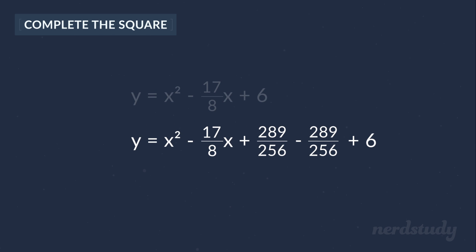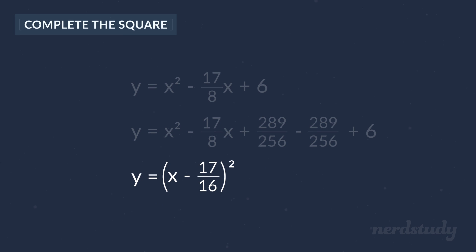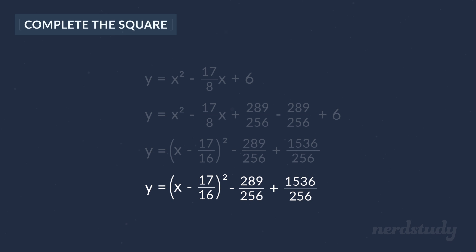Now we can factor this part to get this. We'd end up with y equals x minus 17 over 16 squared minus 289 over 256 plus, and if we convert 6 into a fraction with a denominator of 256, it would be 1536 over 256. Simplifying this would get us to the following.